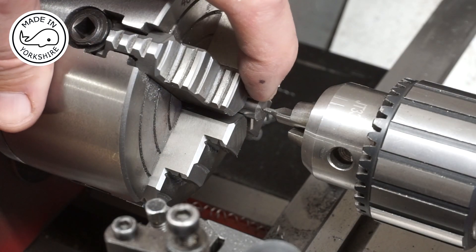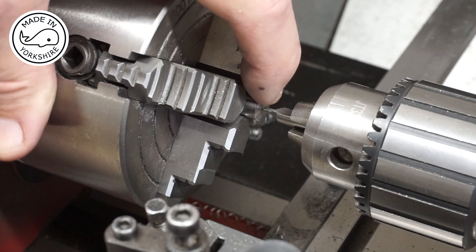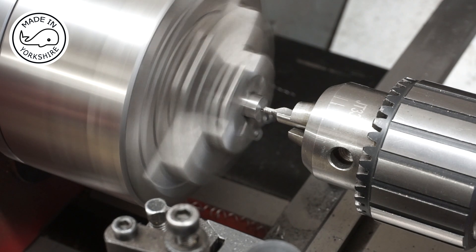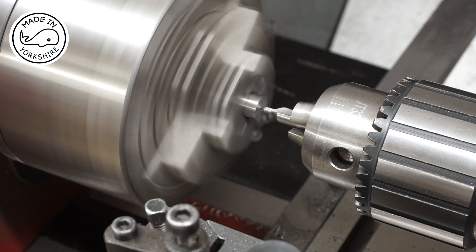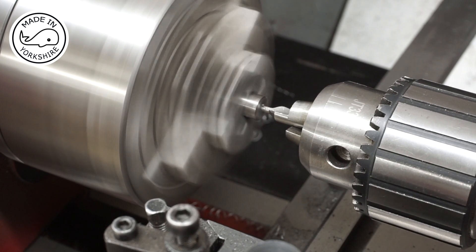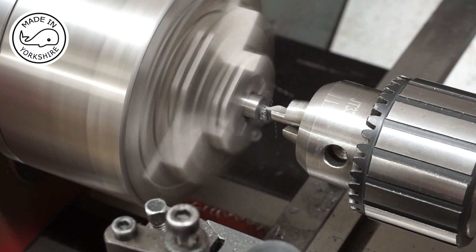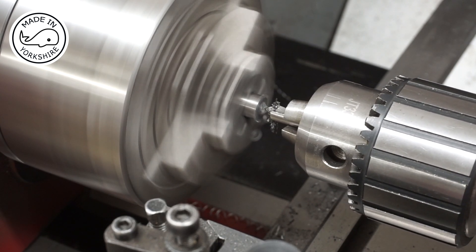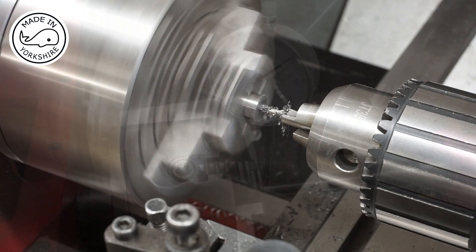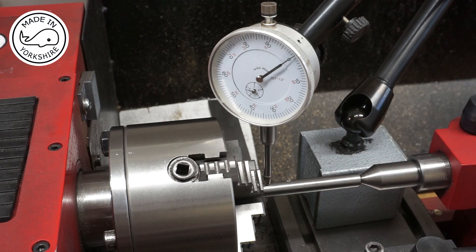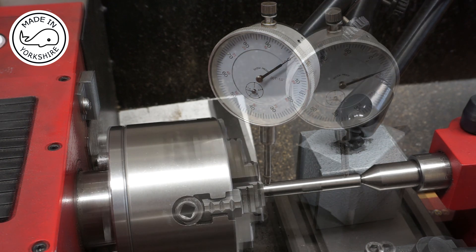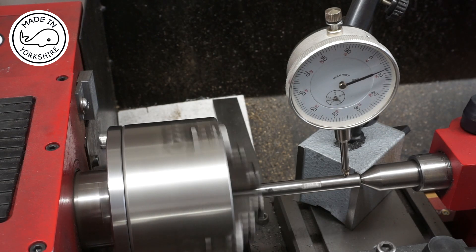So I've centred this piece of three-eighths of an inch silver steel in this four-jaw chuck. Now I'm just going to use this centre drill to put a recess in the end. So I've extended the bar out of the four-jaw chuck and I've made some slight adjustments again. So that's looking spot on.